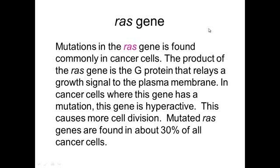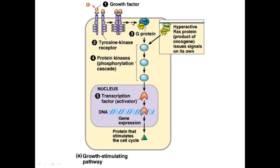It causes more cell division. The RAS gene produces more G protein. More G protein causes the cell to become hyperactive because it produces more transcription factors, and then the cell is cancerous. The RAS gene turns that G protein hyperactive, and you end up with an unrestrained cell cycle.